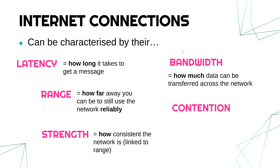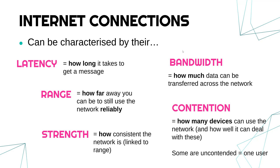Finally, contention — you might have heard the word contentious in normal life. If a decision is contentious it means people are arguing and fighting over it. Contention in a network is similar: it's really how many devices can use the network at once. Can devices fight over the network? Can it deal with multiple devices at once without errors? It's possible to have a network with say 10 devices connected but they can't all communicate at once — you get lots of errors because they interfere and collide. Some networks are uncontended, meaning only one user. This might be something like a leased line where a company pays to have an uncontended network which only they use.